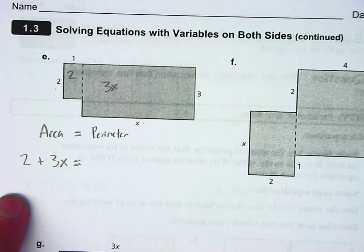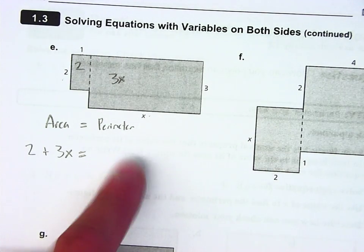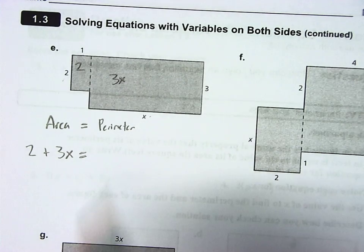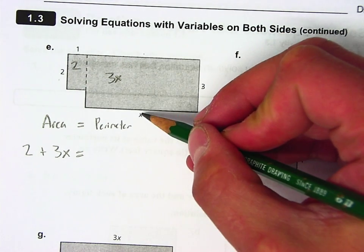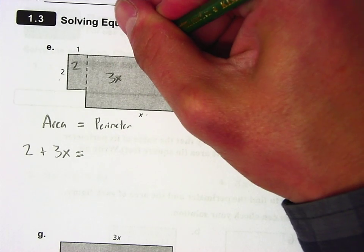Okay, that's not so bad. Now I need an expression for the perimeter. Well, to do that, I should probably make sure I label the sides that aren't labeled. So since this is a rectangle, I know up here I have x.